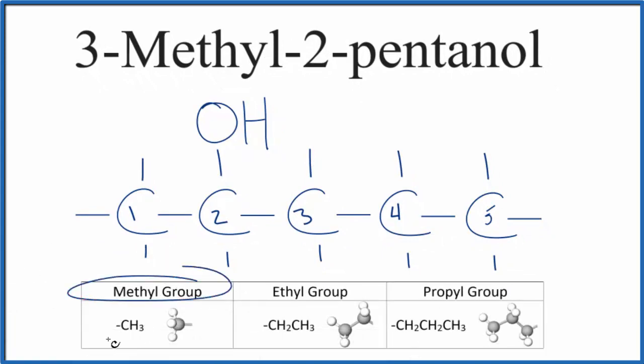So the methyl group, that's CH3, a carbon with 3 hydrogens. So we're going to put that on the third carbon in 3-methyl-2-pentanol.